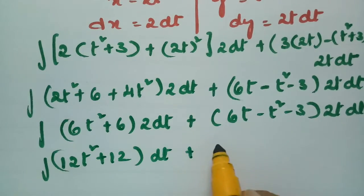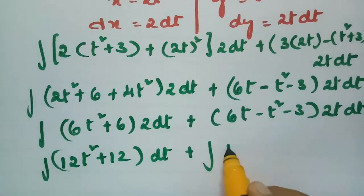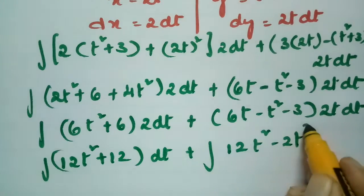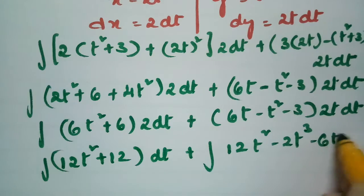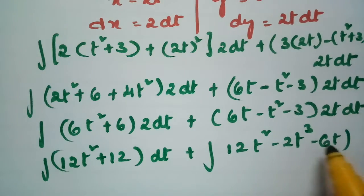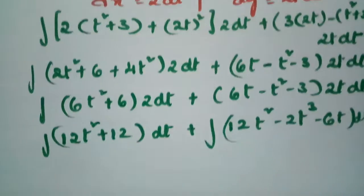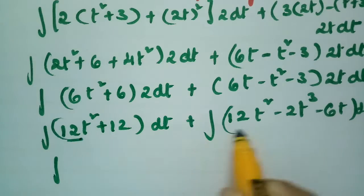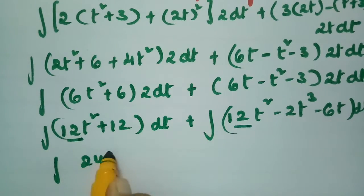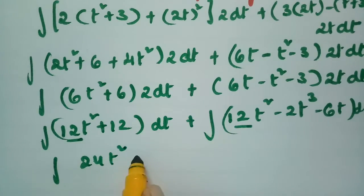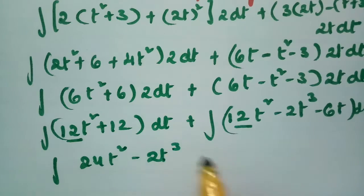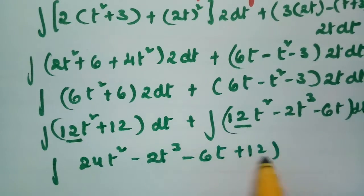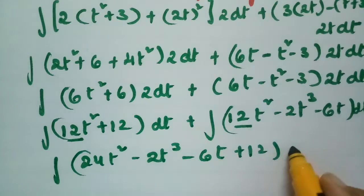Bringing everything into one integral: 12t² + 12 from the first part, and combining with the second part gives 24t² - 2t³ - 6t + 12, all times dt.